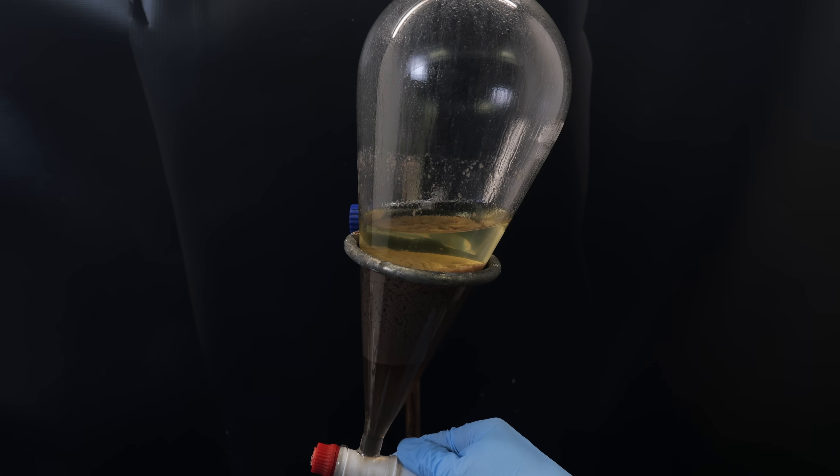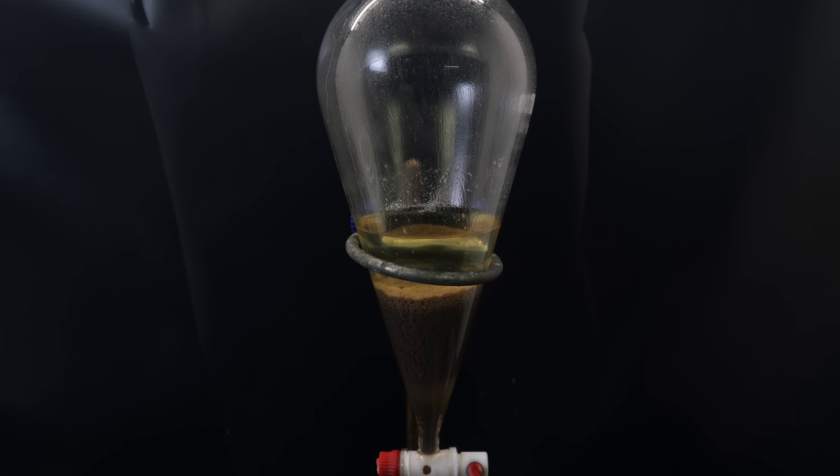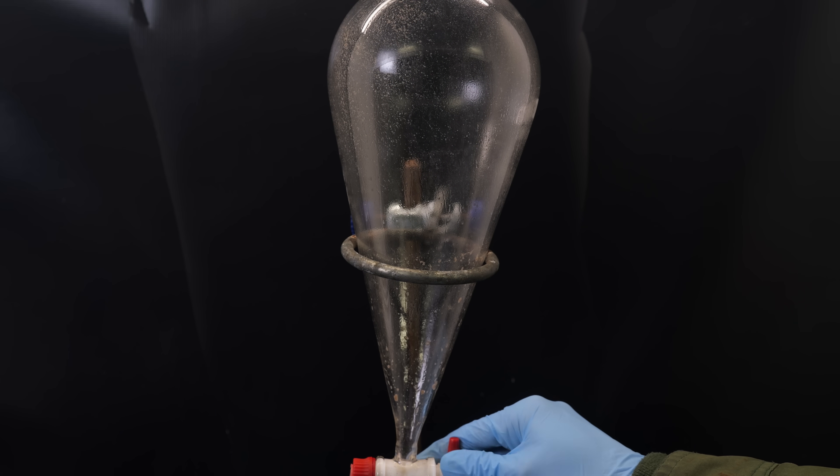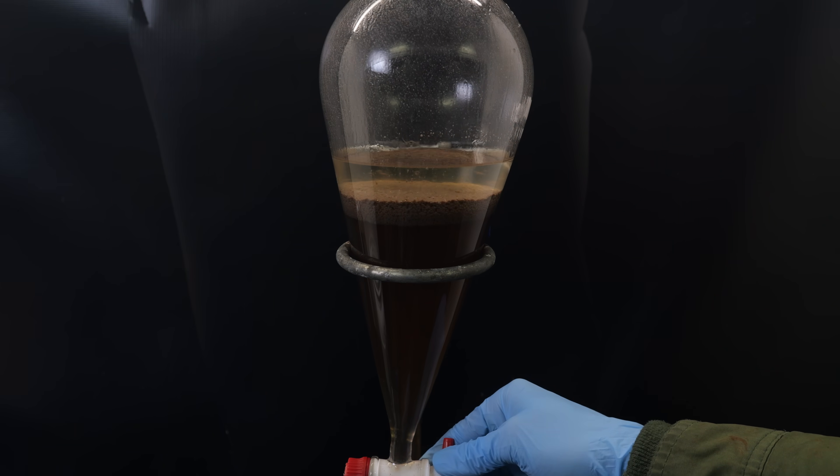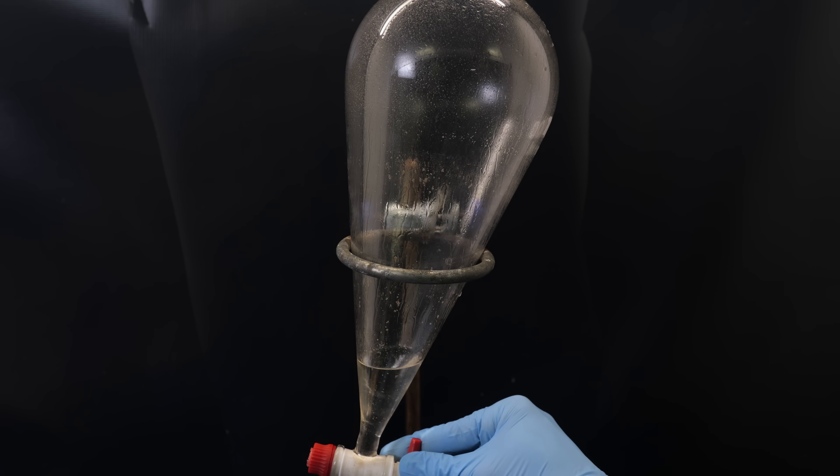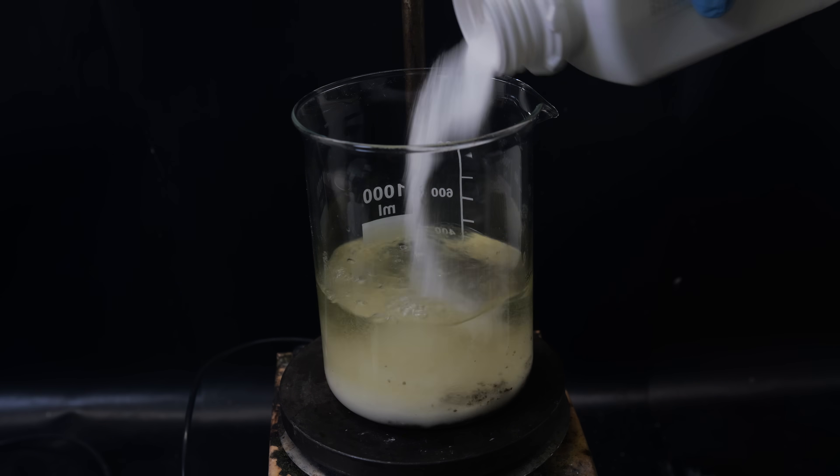But there is also a bunch of solid floating around, that makes it more difficult to see. I just take the yellow ether layer, and then extract the water phase twice more with ether. After that, I am left with the ether layer containing the product, and some solid junk that holds onto water.